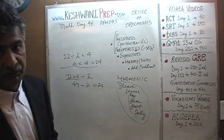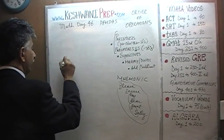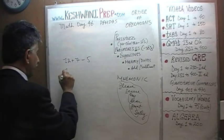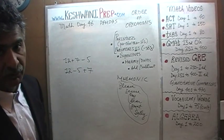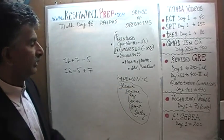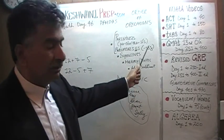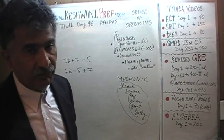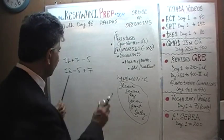Similarly, addition and subtraction have the same priority. If you have 12 + 5 - 7, that gives you the same answer as 12 - 5 + 7. It really doesn't matter which one you do first. But the important thing to keep in mind is: take care of parentheses first, then exponents, then multiplication and division, then finally addition and subtraction. Let's do some problems.